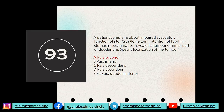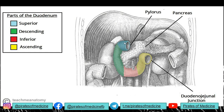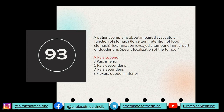Question 93: a patient complains about impaired evacuatory function of the stomach with long-term retention of food. Examination revealed a tumor of the initial part of the duodenum — specify its localization. The duodenum has four parts: the superior part (blue), the descending part (green), the inferior part (red), and the ascending part (yellow). The superior part connects directly with the stomach, so the answer is the superior part of the duodenum.